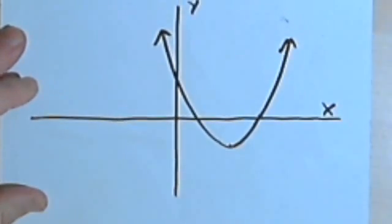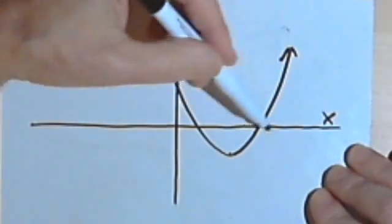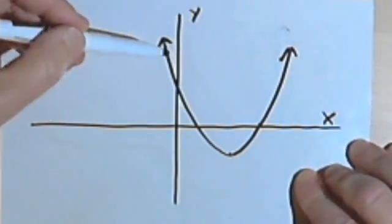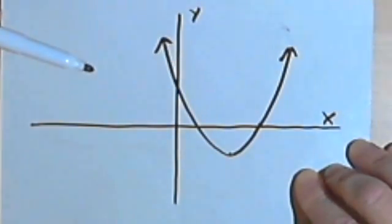So here's a graph of a quadratic function. I've got my vertical and my horizontal axes. I've labeled the horizontal axis x and the vertical axis y. And I've got this curve here. This curve is called a parabola.